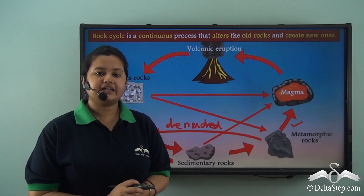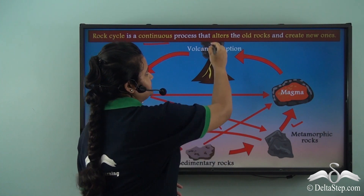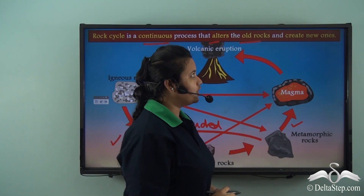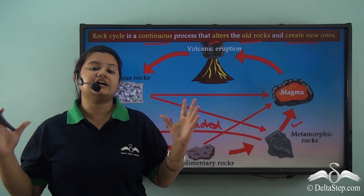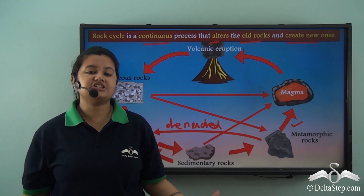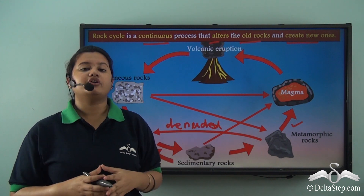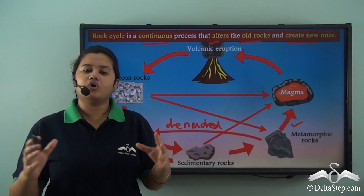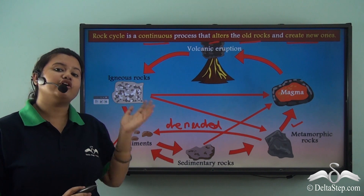So what is a rock cycle? A rock cycle is a continuous process that alters or transforms the old existing rocks and creates new ones. All three different types of rocks — igneous rocks, sedimentary rocks, and metamorphic rocks — are correlated and they are formed during this process of the rock cycle.